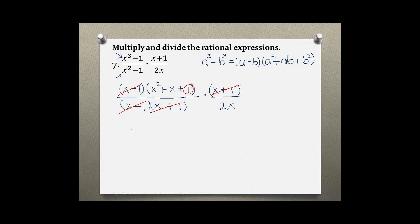Writing what's left over: on top we have x squared plus x plus 1, and on the bottom we have 2x. That would be our final answer for this problem.